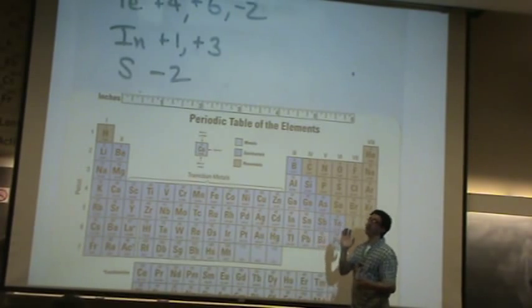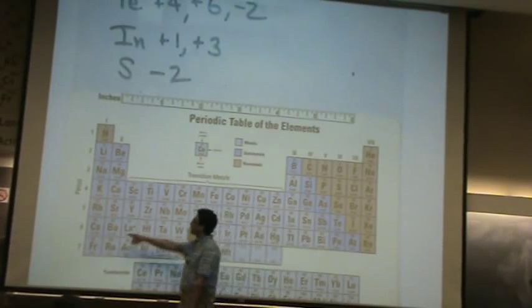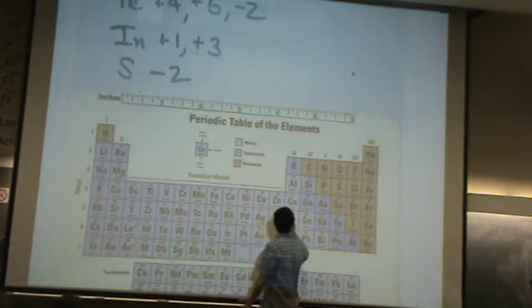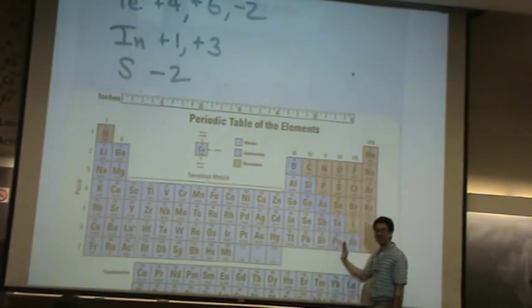Normally, you should be able to come up with the largest positive number. Let's take indium. If you lose this electron, that one, and that one, plus three. Right. So, this is a plus three column. This is a plus four, plus five, et cetera.